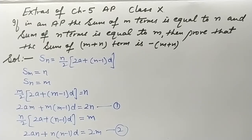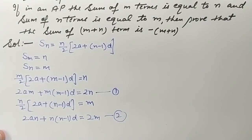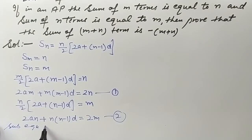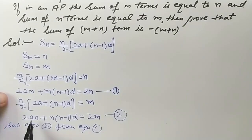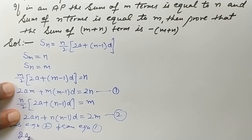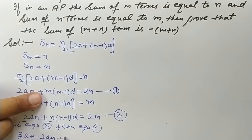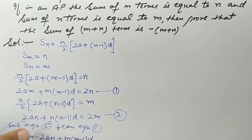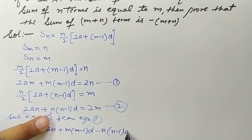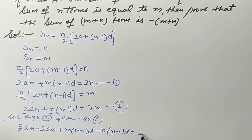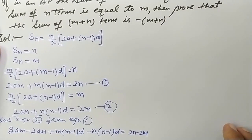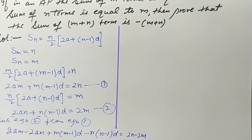Now we subtract equation 2 from equation 1. Subtracting gives: 2am − 2an + m(m−1)d − n(n−1)d = 2n − 2m.